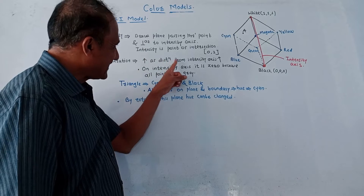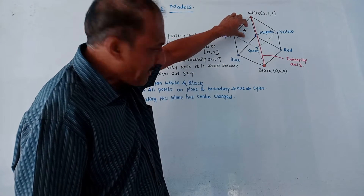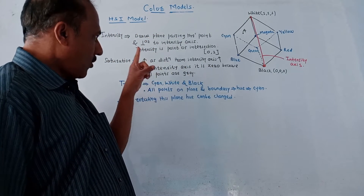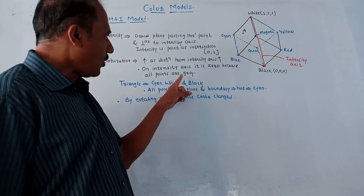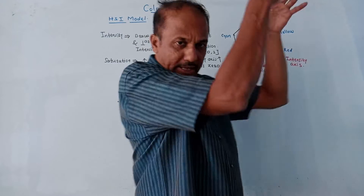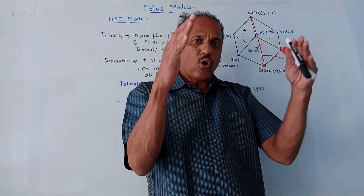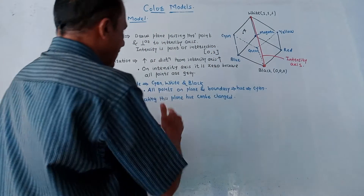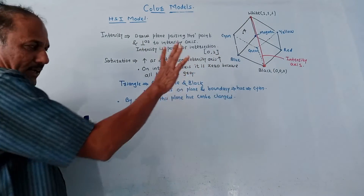Saturation increases as distance from the intensity axis increases. On the intensity axis itself, saturation is zero because all points on that axis are gray points — that is the gray scale from black to white. So the saturation of any point lying on the intensity axis is zero.